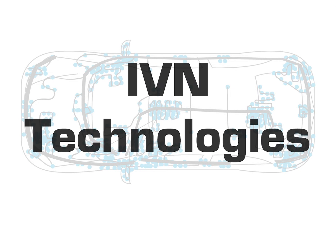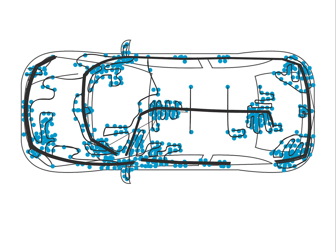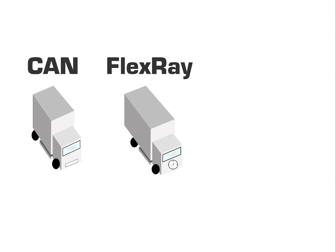There are a number of different IVN technologies available, each with different capacities. In the following, we'll explain the basic functioning of the most commonly used technologies, namely CAN, FlexRay, and ETHNET.